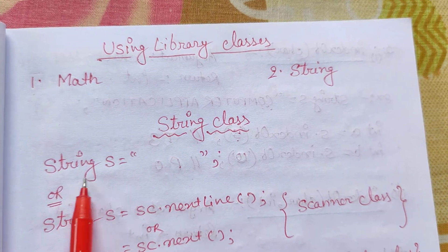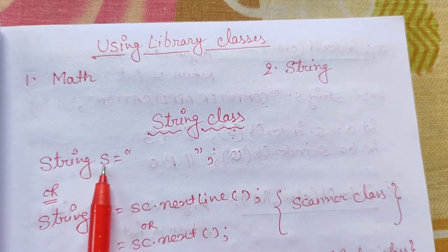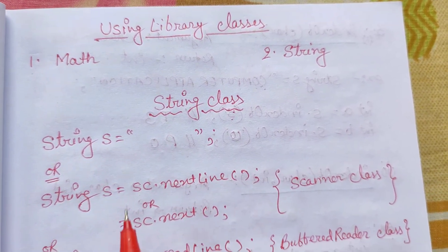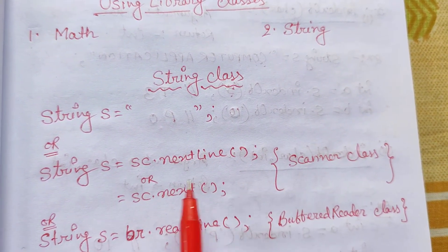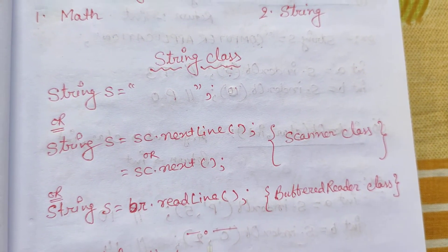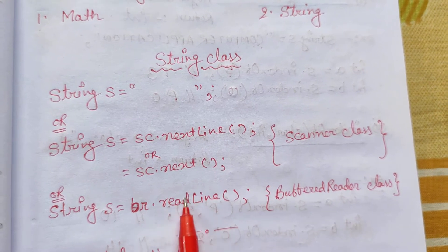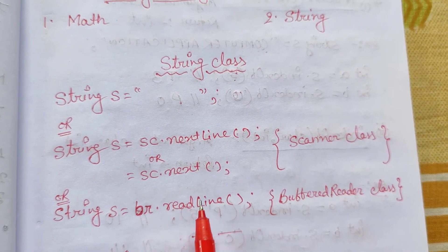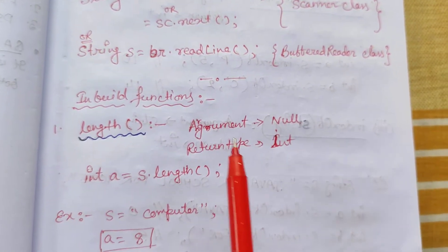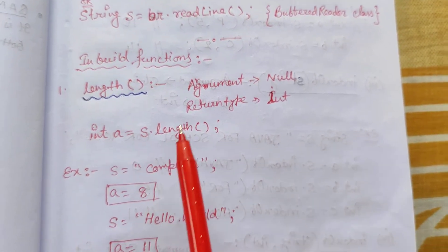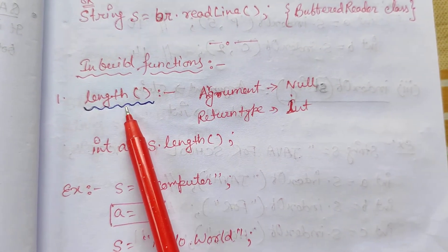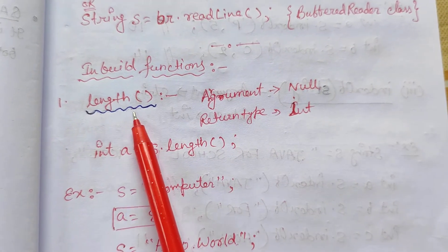We know how to take string value. String s — suppose s is the variable — within double quotation anything we write will be a string. Or using a Scanner class we can take input with sc.nextLine() or sc.next(), and using BufferedReader with br.readLine() or read() we can take input as string. The first inbuilt function we will learn is the length() function under String class. It is used to get the length of a string.